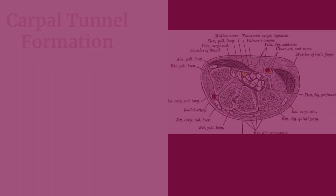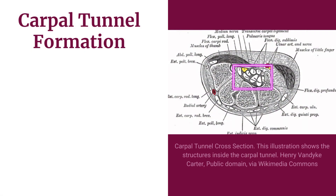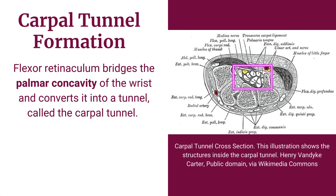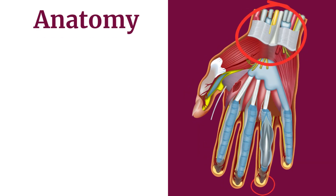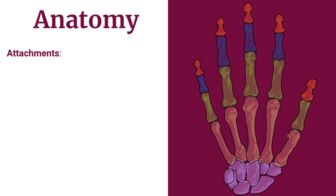The carpal tunnel is formed when the flexor retinaculum bridges the palmar concavity of the wrist and converts it into a tunnel called the carpal tunnel. Regarding attachments, medially it is attached to the scaphoid and trapezium bones.